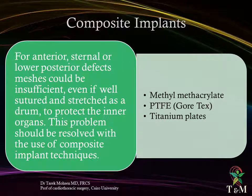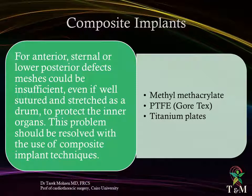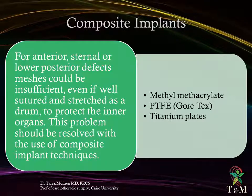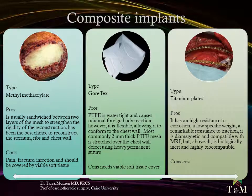For anterior, sternal, or lower posterior defects, meshes could be insufficient even if sutured and stretched as a drum, to protect the intrathoracic organs. This problem should be resolved with the use of composite implant techniques, incorporating other materials such as methyl methacrylate, Gore-Tex, and titanium plates. Different composite implant materials have been proposed; however, each has its pros and cons.